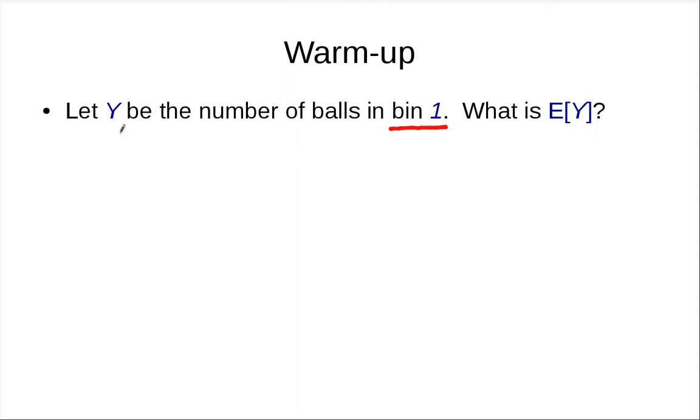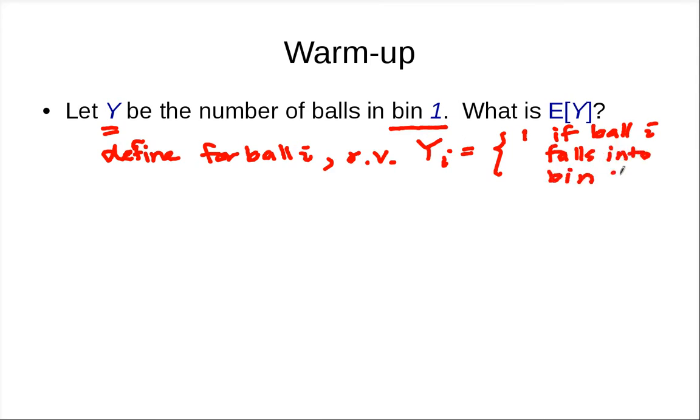So the way to calculate this Y, we're going to define a new random variable. So define for ball i, a random variable Yi to be 1 if ball i fall into bin 1, and this is 0 otherwise.